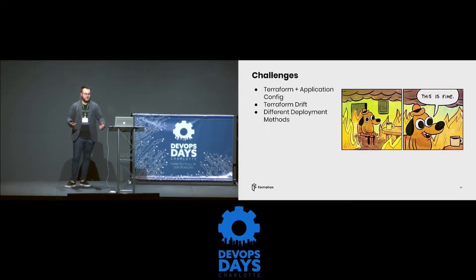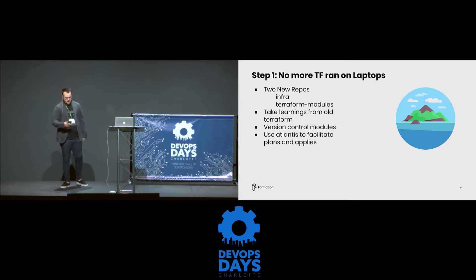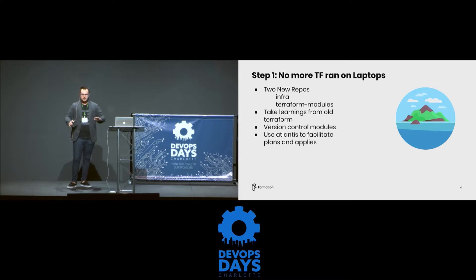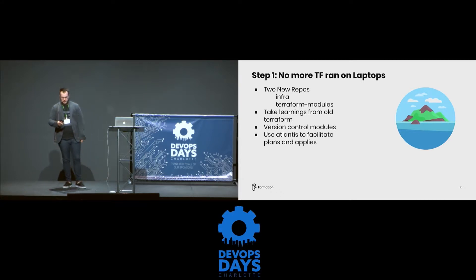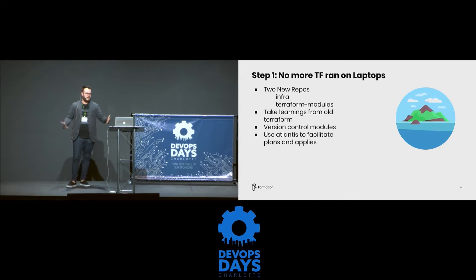I came in optimistic — new company, moving out to the Bay Area. Step one was no more Terraform run on our laptops. I decided to split things out into two new repos for Infra and Terraform modules. We wanted a fresh, clean start and utilize Terraform modules — which we weren't using before — to have small, reasonable bits of code so we don't have to intertwine everything. We also decided to start using Atlantis, a great tool just acquired by HashiCorp, for doing a GitOps-style of plans and applies. That means no more Terraform running on laptops.